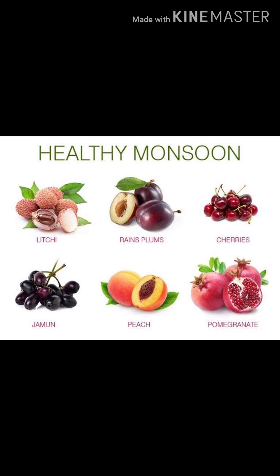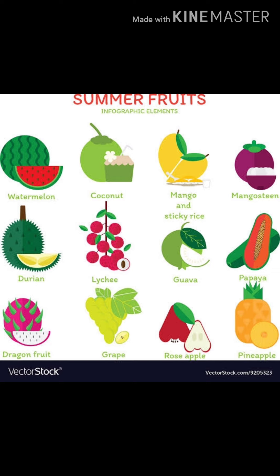The availability of fruits varies according to the season. Different fruits are available in different seasons. For example, fruits available in monsoon are lychee, rain plums, cherries, jamun, peach, and pomegranate. Fruits available in summer are watermelon, coconut, mango, mangosteen, durian, lychee, guava, papaya, dragon fruit, grape, rose apple, and pineapple.